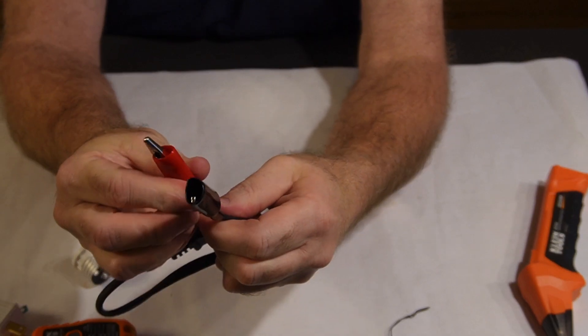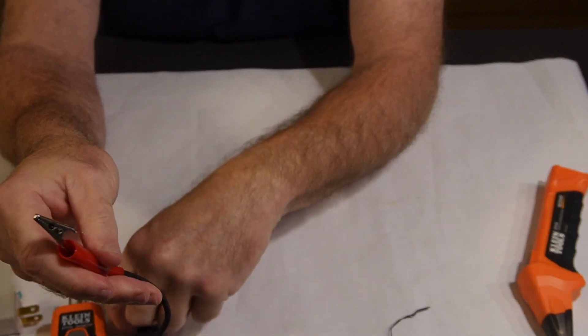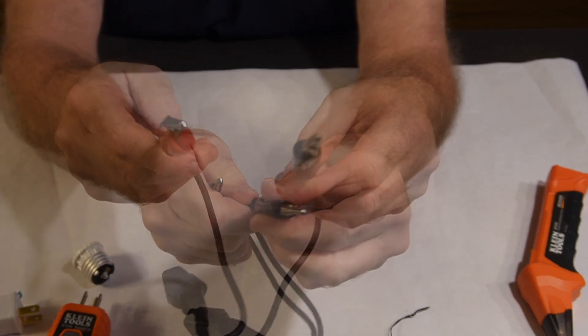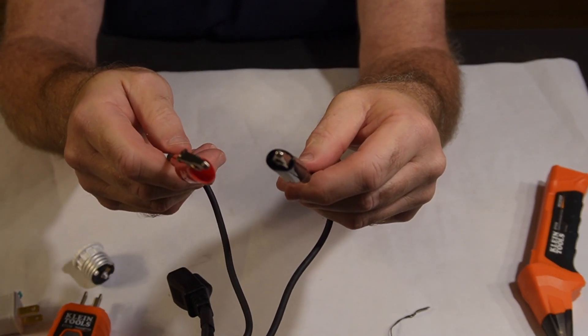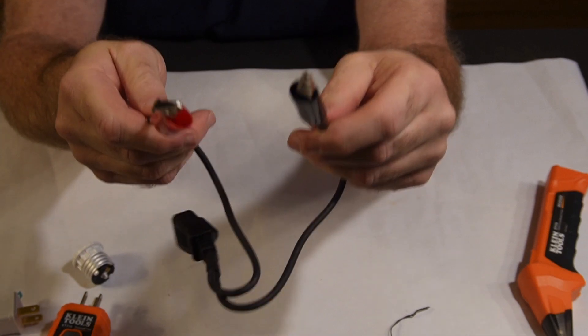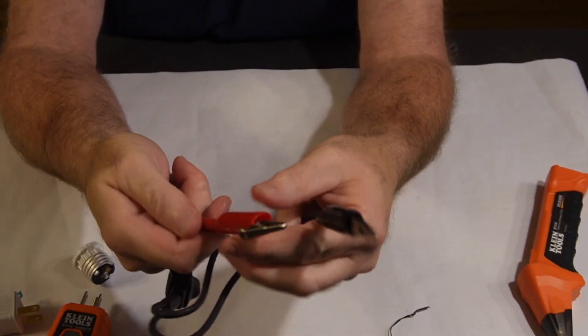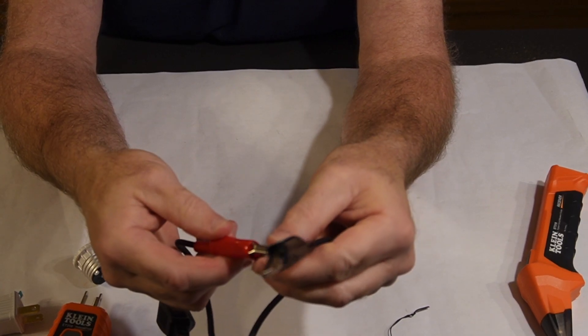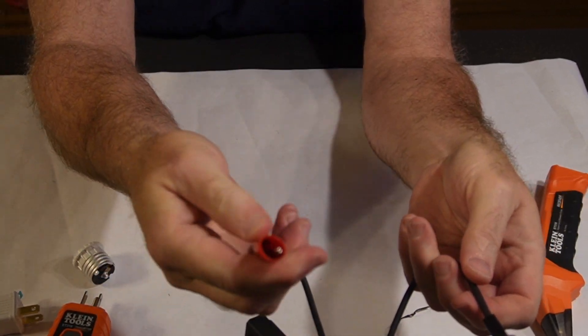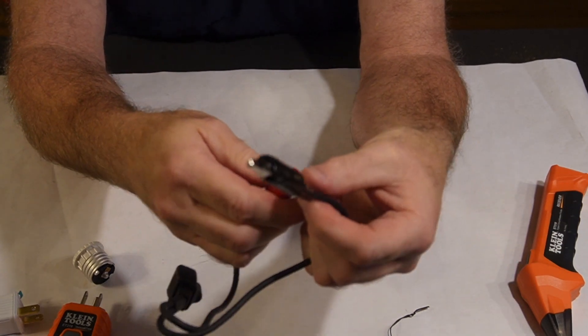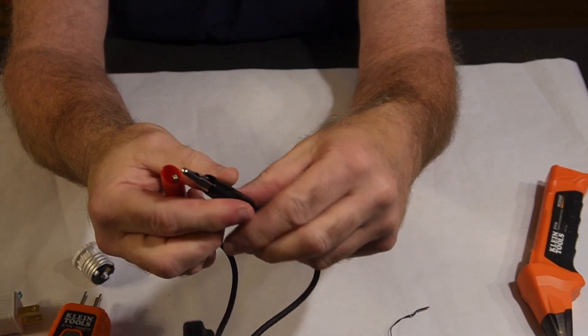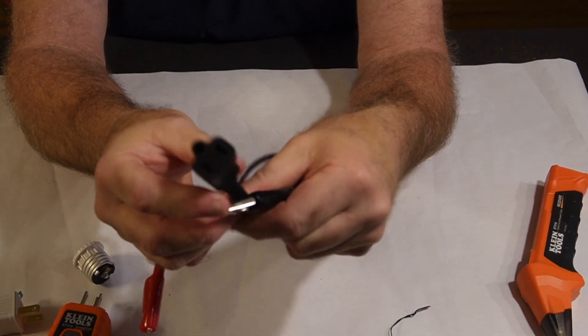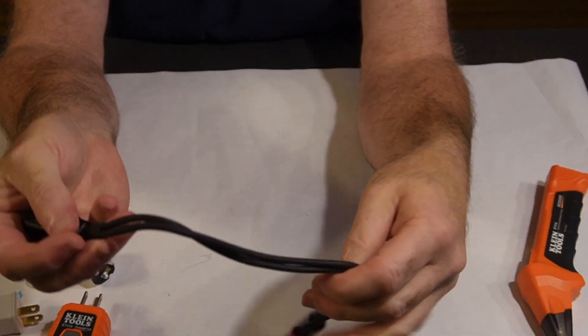What this does is there are alligator clips on the end. If you're, for example, trying to trace a circuit in a junction box, you can take the wire nuts off and put these on. It has these insulated sleeves on it so that it's safe to put them onto the wire while it's hot, and you can then plug in the tester and use this to help you find the circuit.